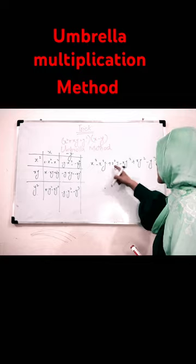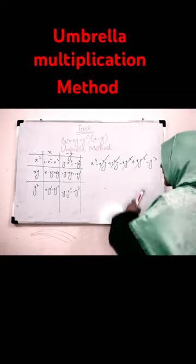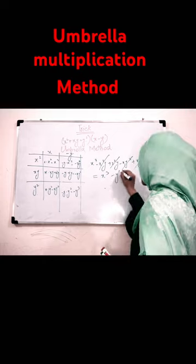Plus minus x square y, plus x square y getting cancel. Minus xy square plus xy getting cancel. We get x cube minus y cube.